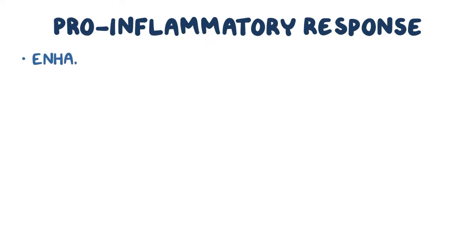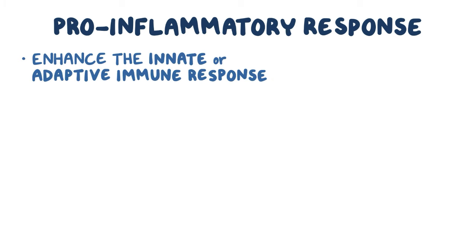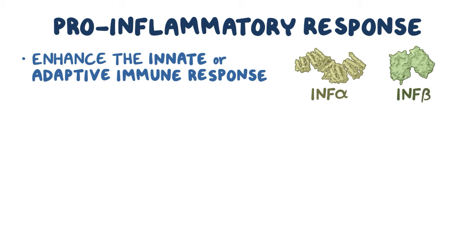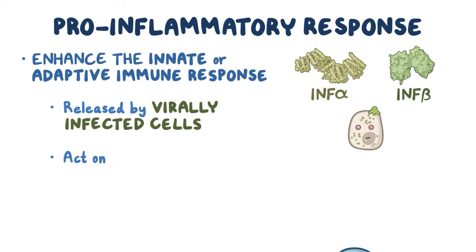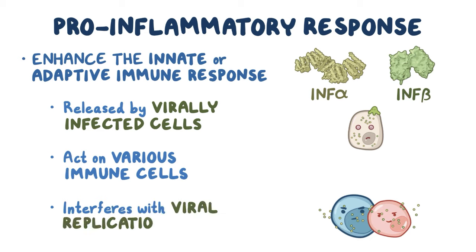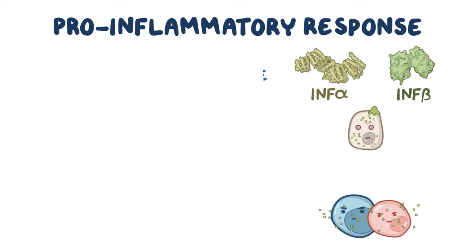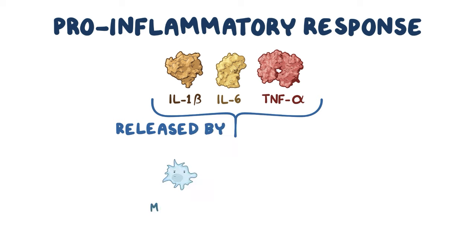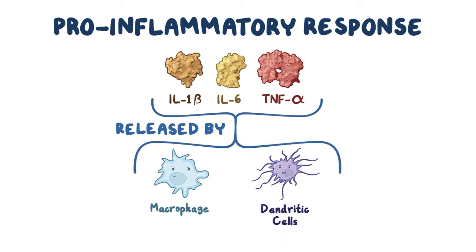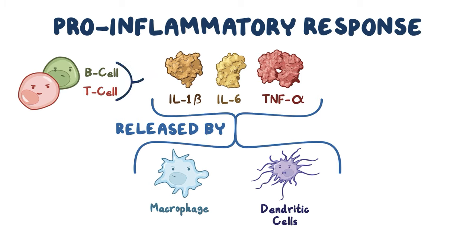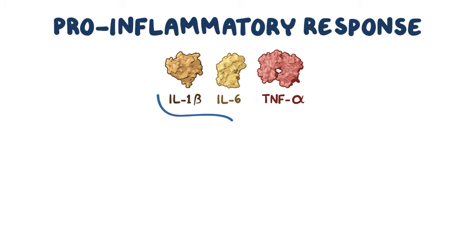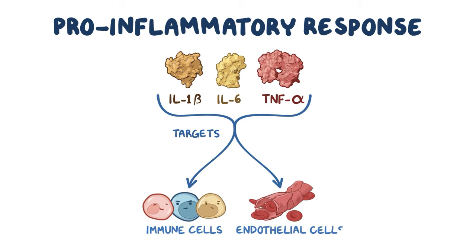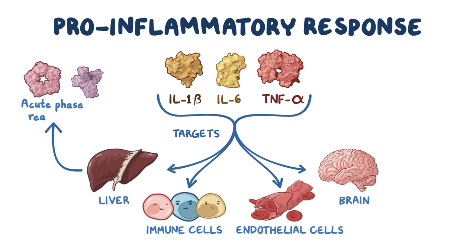The highly pro-inflammatory response for fighting intracellular pathogens includes cytokines that enhance the innate or adaptive immune response. These include interferon alpha and interferon beta, which are produced by virally infected cells and work on various immune cells to help interfere with viral replication. In addition, there's interleukin-1-beta, tumor necrosis factor alpha, and interleukin-6, which are produced by macrophages and dendritic cells. Interleukin-6 can additionally be produced by T and B cells. Their major targets are various immune cells as well as endothelial cells, where they promote migration of leukocytes, and the liver and brain, where they cause production of acute phase reactants and cause fever.